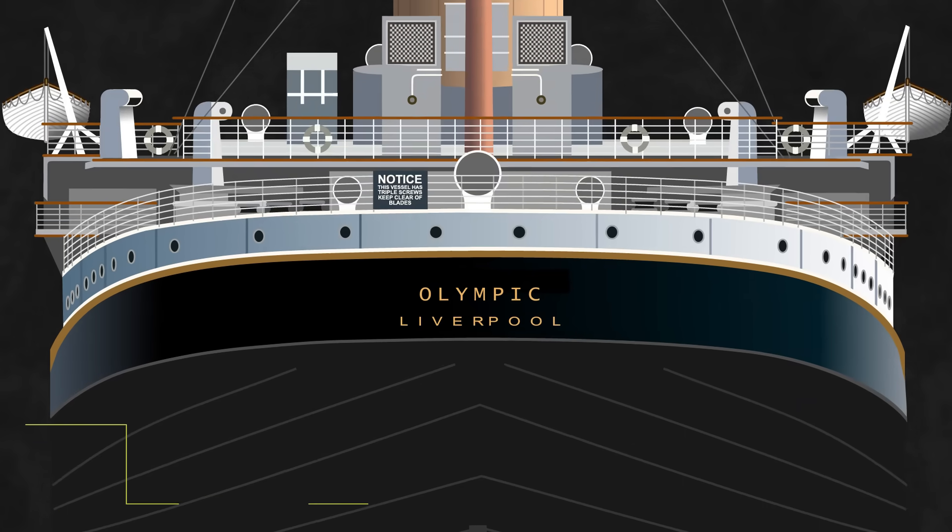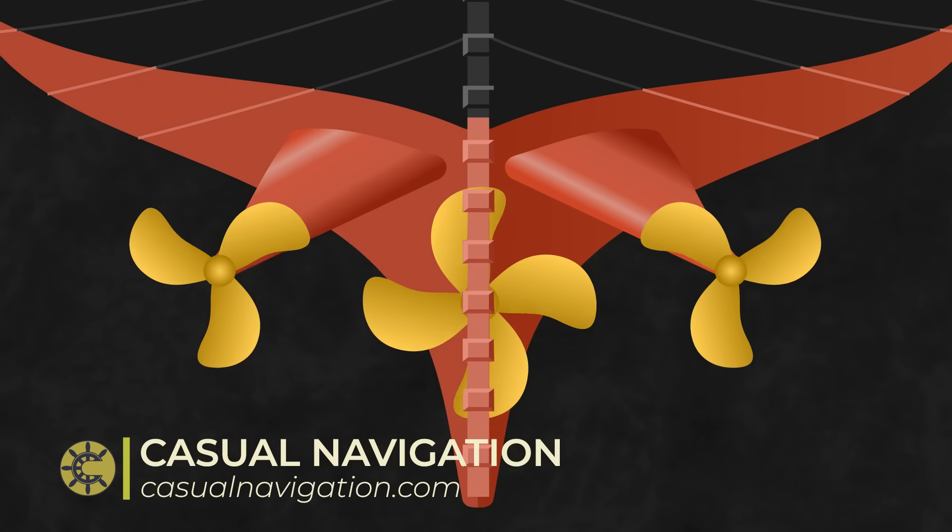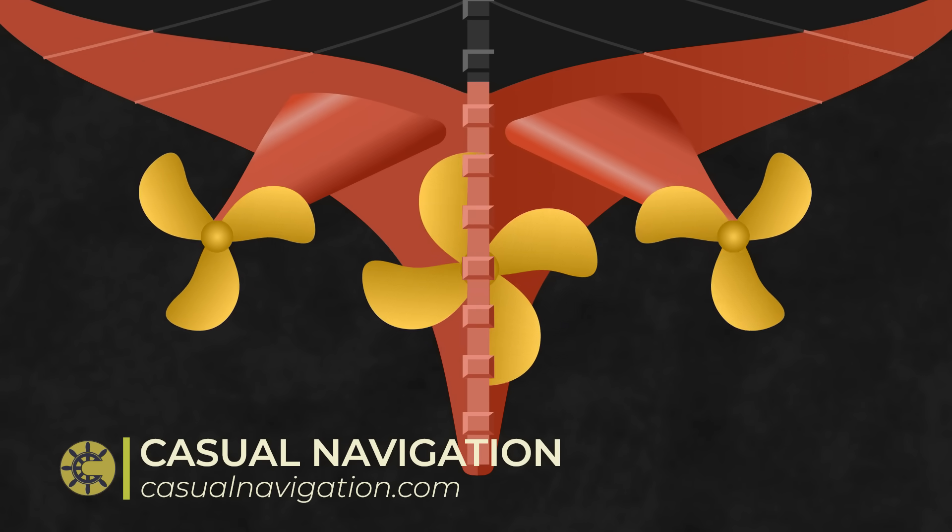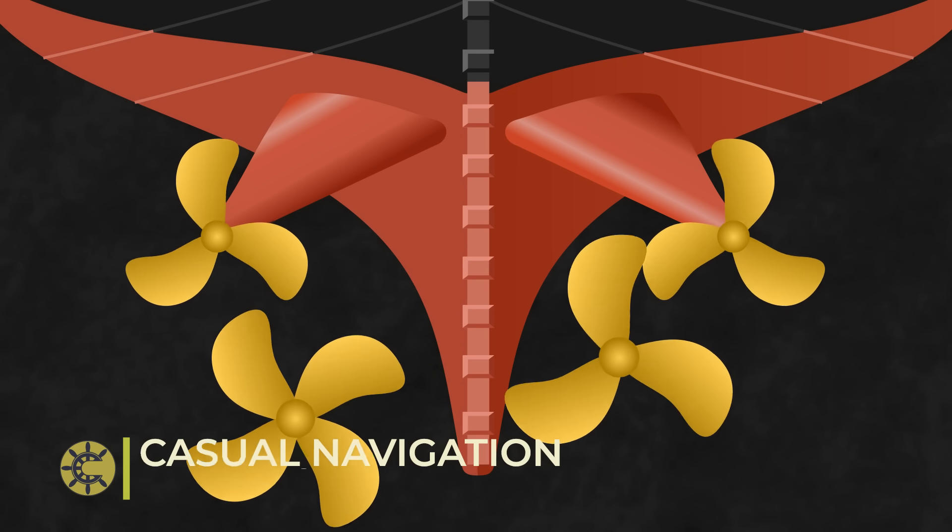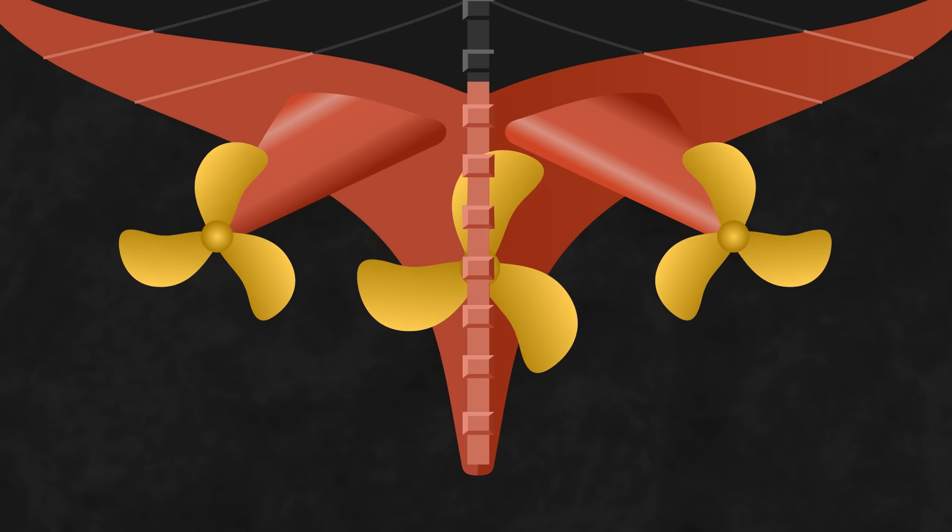Then we get to ships like the Olympic that were fitted with a four-bladed central propeller with three-bladed props on either side. Of course, that's led to the mystery of the Titanic's central propeller. Was it three-bladed, or was it four?